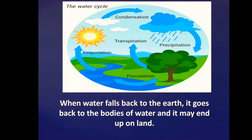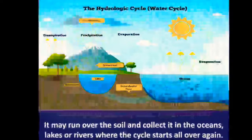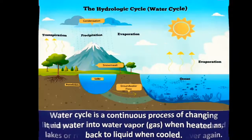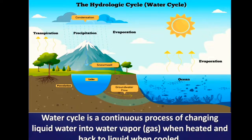When water falls back to the earth, it goes back to the bodies of water and it may end up on land. It may run over the soil and collect in the oceans, lakes, or rivers where the cycle starts all over again. Kaya nga tinatawag na renewable ang water dahil sa life cycle — paulit ulit. The water cycle is a continuous process of changing liquid water into water vapor or gas when heated, and back to liquid when cooled.